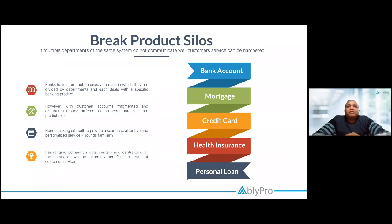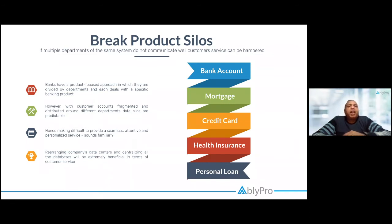If these systems were talking to each other and not silo systems but one system, the banking executive would have logged in and realized that John is not only a bank account customer but also a credit card customer. With that knowledge, the sales pitch is very different — instead of trying to give you a credit card, he would try to upsell you, perhaps suggesting to increase the credit limit of your credit card based on your recent transaction history.